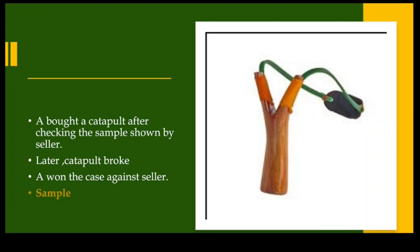Regarding samples: if I show you a sample of a catapult, then give you a different one from the same lot that is not as good as the sample, you can take legal action. This happens in electronics shops — they display a working item but sell you a packaged product that may differ. If there's a problem with the product you received, and the sample shown was different, you can take legal action. The sample was correct but the product received was wrong.